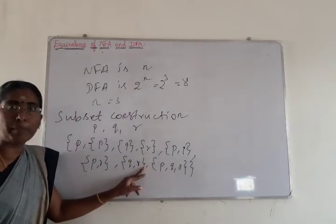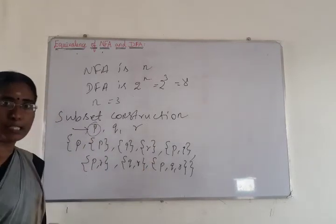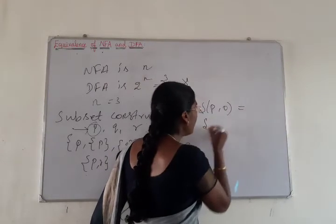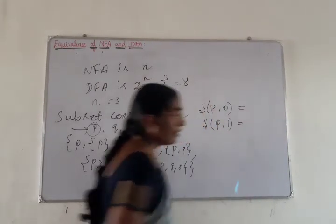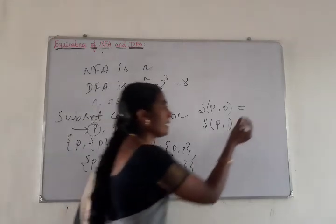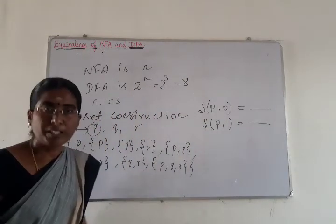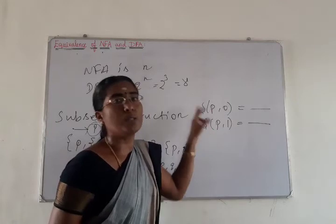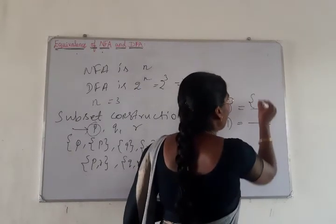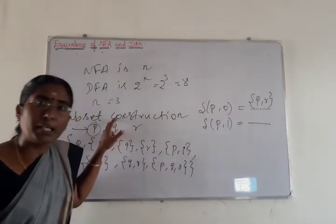From this, how we construct the DFA: first we have to extend from the start state. Here P will be considered as the start state. We have to extend the start state for input symbol 0, and then extend the start state for input symbol 1. The set of states obtained by using these extended transitions from the start state belong to the states of the DFA. For example, if we obtain the state P comma R, then P comma R is a state of the DFA.